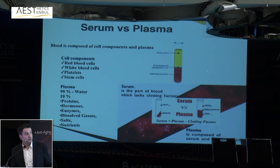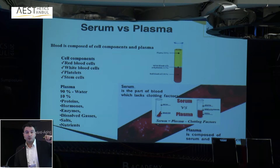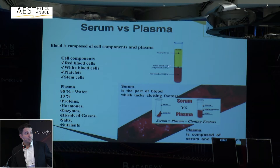In platelet-rich plasma, if you look just at the blood cell composition, you have 93% red blood cells, around 6% white blood cells, and just 1–2% platelets. This is very important to know regardless of what system you use — after centrifugation in a tube system, platelets will sit in the middle. The lower part will have very few platelets, up to two times baseline at most, while most platelets concentrate in the buffy coat layer.